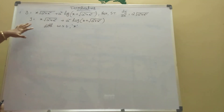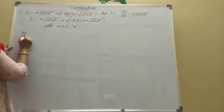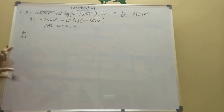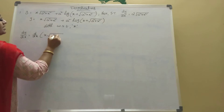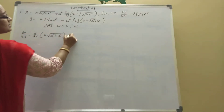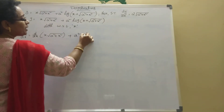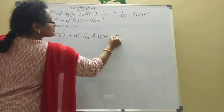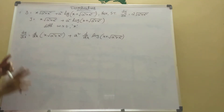Now d by dx of y, that is dy by dx. See here, x into root — two functions are there, so uv formula. d by dx of x into root of a square plus x square, apply d by dx uv formula. And here a square is a constant — no x term. So take a square into d by dx of log of x plus root of a square plus x square.